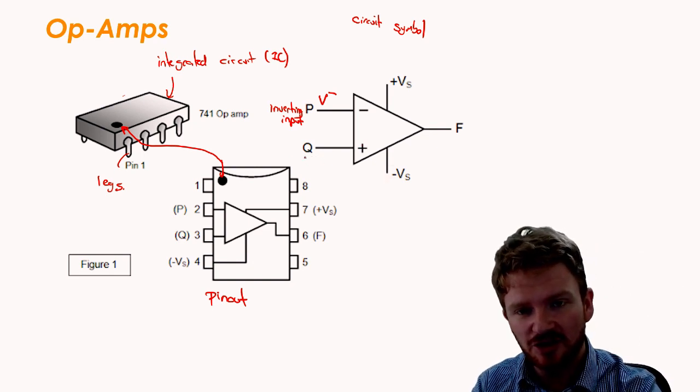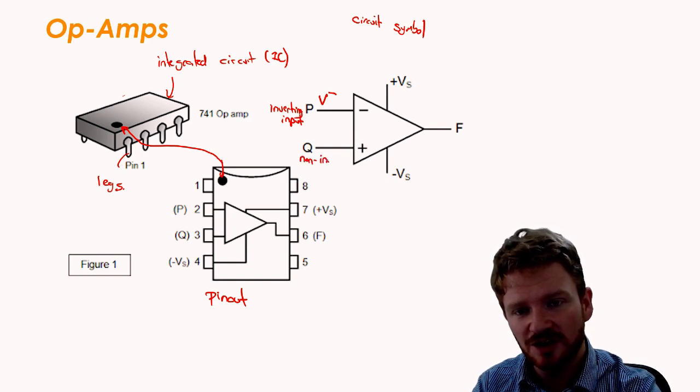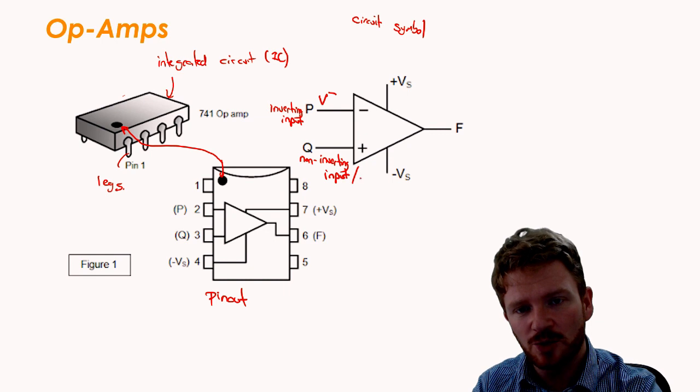The other one connected to the positive, well, you might be able to work it out. This is called the non-inverting input, and that will become clear to you later why we call it that. But that has the symbol V+.